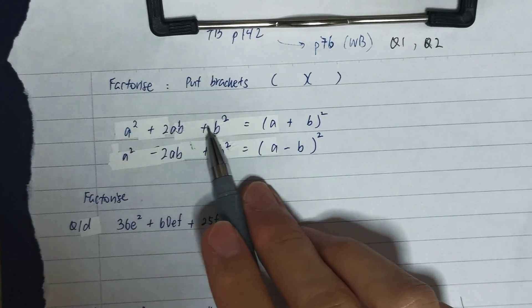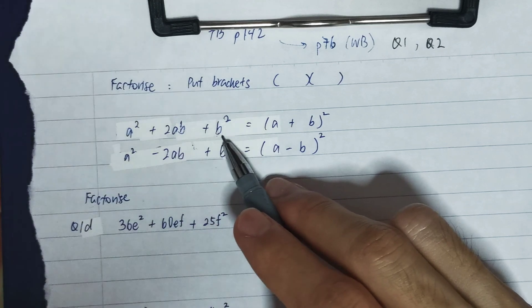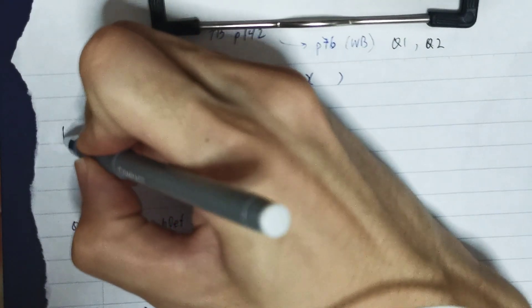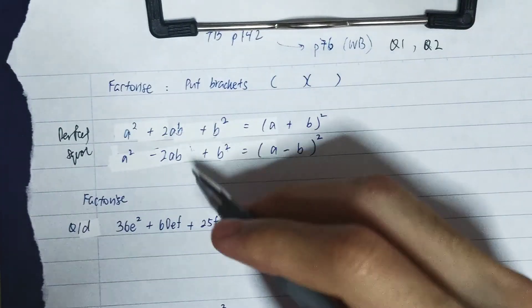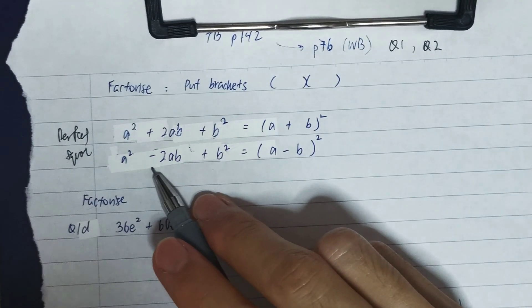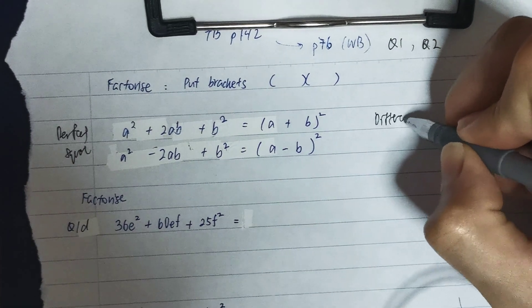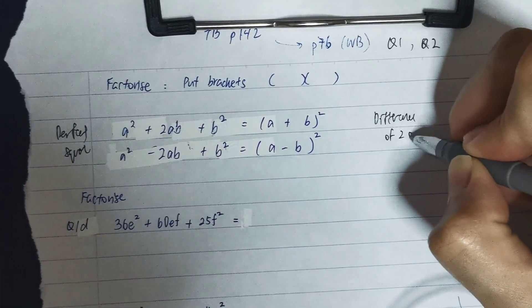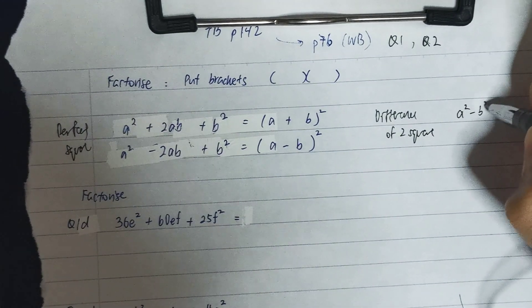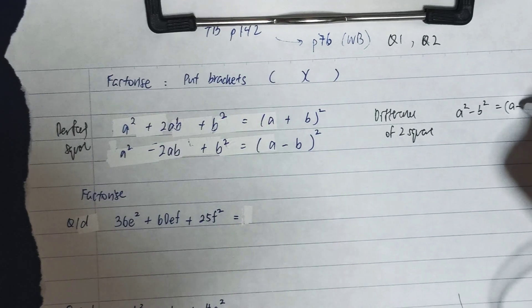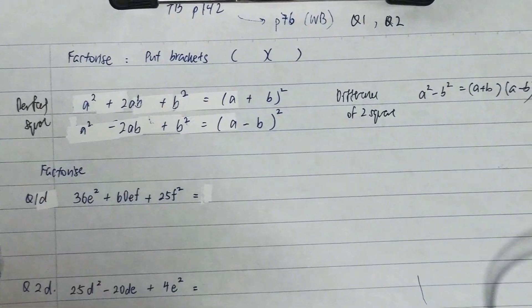So this is some of the special identity that we have learned previously: a² + 2ab + b², this one is the perfect square with the plus and the minus in different ways, and then the next one will be the difference of two squares, which is a² - b², and once you factorize it you'll get (a + b)(a - b).